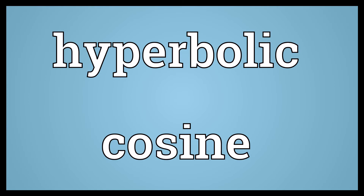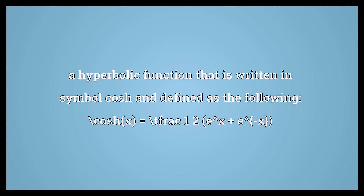Hyperbolic cosine. A hyperbolic function that is written in symbol cosh and defined as the following: cosh x equals one half times e to the x plus e to the negative x.